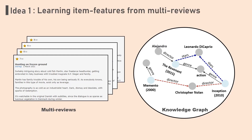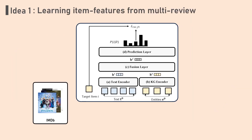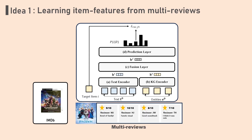To overcome the first challenge, we can leverage multi-reviews and a knowledge graph, which usually contain a wide variety of information about each item's features. For example, if there are multi-reviews for the movie Frozen, we can feed each review into the model and train it to understand the items and their various features.